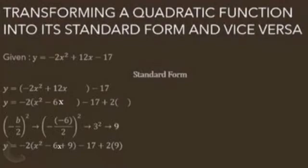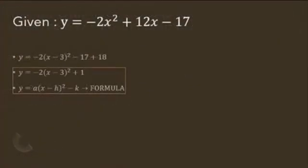The last step into transforming a quadratic function into its standard form is to simplify and express perfect square trinomial as a square of binomial, in which the square of binomial in this problem is x minus 3 squared. x minus 3 squared are the factors of x squared minus 6x plus 9.